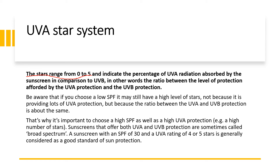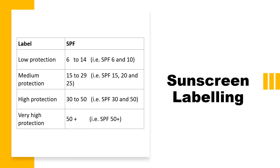Sunscreens that offer both UVA and UVB protection are called broad-spectrum sunscreens. A sunscreen with an SPF of 30 and a UVA rating of 4 to 5 stars is generally considered a good standard for sun protection. The SPF table shows: SPF 6–14 gives low protection, SPF 15–29 gives medium protection, SPF 30–50 gives high protection, and SPF 50+ gives very high protection — though the difference between high and very high is only 1–2%.